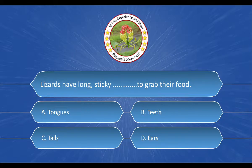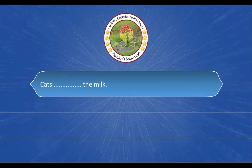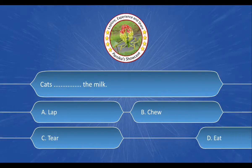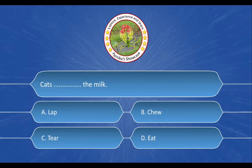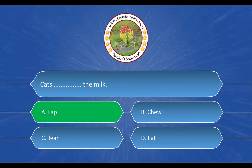And the correct answer is option A. Tongues. Next question: Cat dash dash the milk. The options are A. Lap, B. Chip, C. Tear, D. Eat. And the correct answer is option A. Lap.